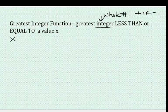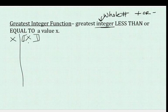Let's look at what happens if we do a table. Greatest integer notation looks like this — it's like double brackets around the x. So let's start with some values.